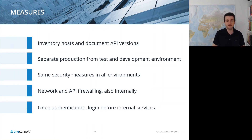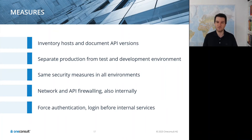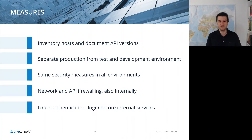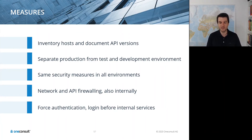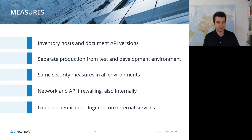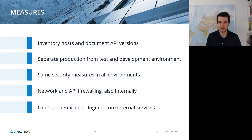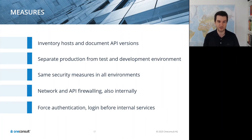Preventive measures: inventory hosts and document API versions, separate production, test, and development environments as much as possible, ideally avoid using production data in other environments, apply the same security measures across all environments, use network and API firewalls for endpoints even for requests from internal systems not expected to make those requests — applying a healthy amount of defense in depth — and force authentication in front of any service exposing sensitive data or powerful functionality, even if it's only internally accessible.